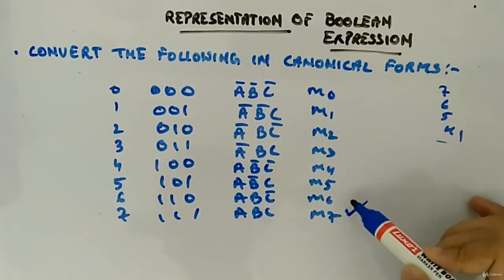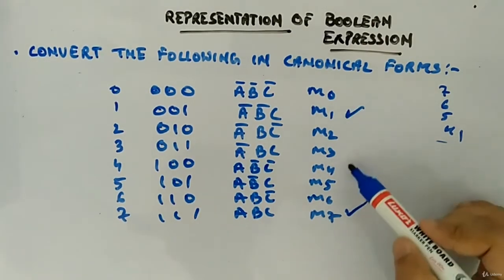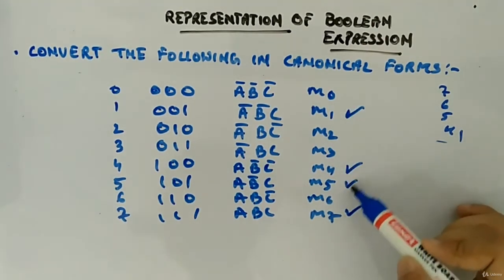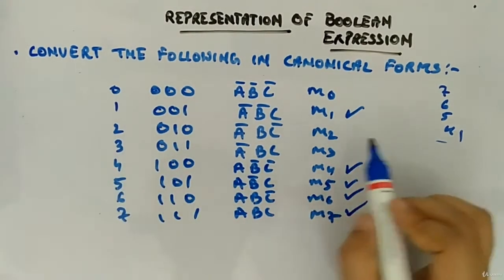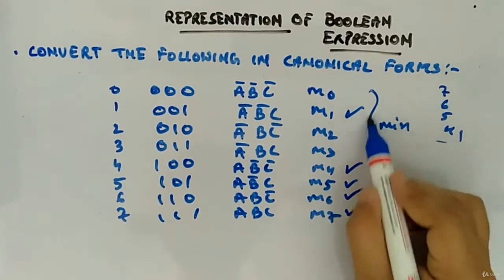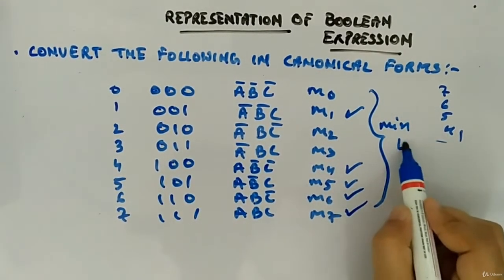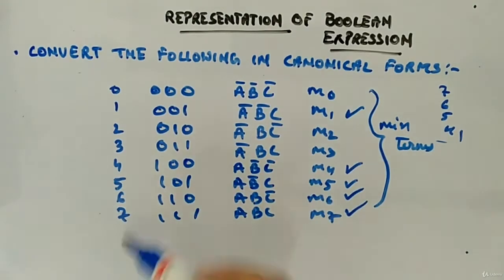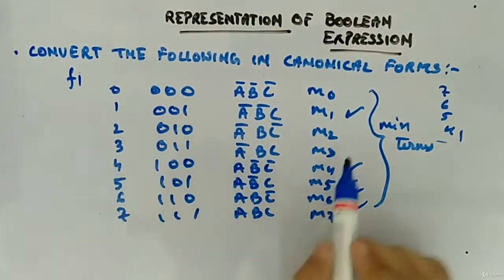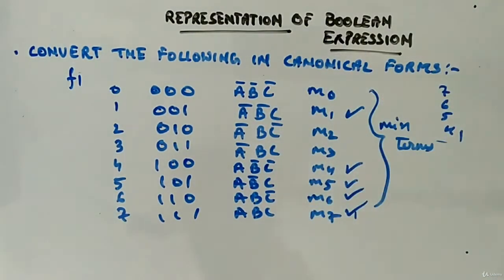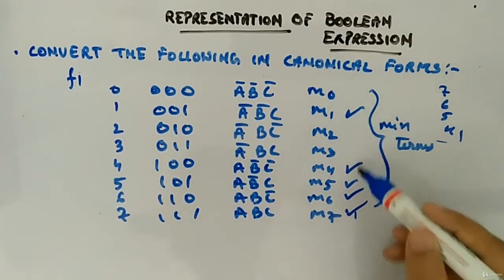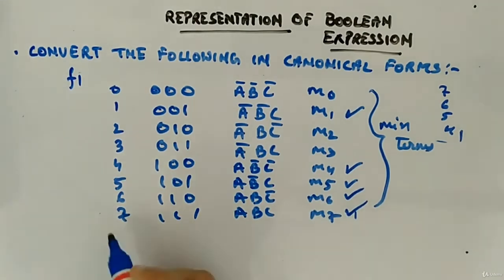So we have M7 and M4, M5, M6. These are the minterms which are called as minterms. These are called as minterms, all minterms. And in our function, that F1 function, these many, these 4, 3, 4, 5 are present. Total this many can be possible which are called as minterms. And for our function F1, only 1, 2, 3, 4, 5 are present.